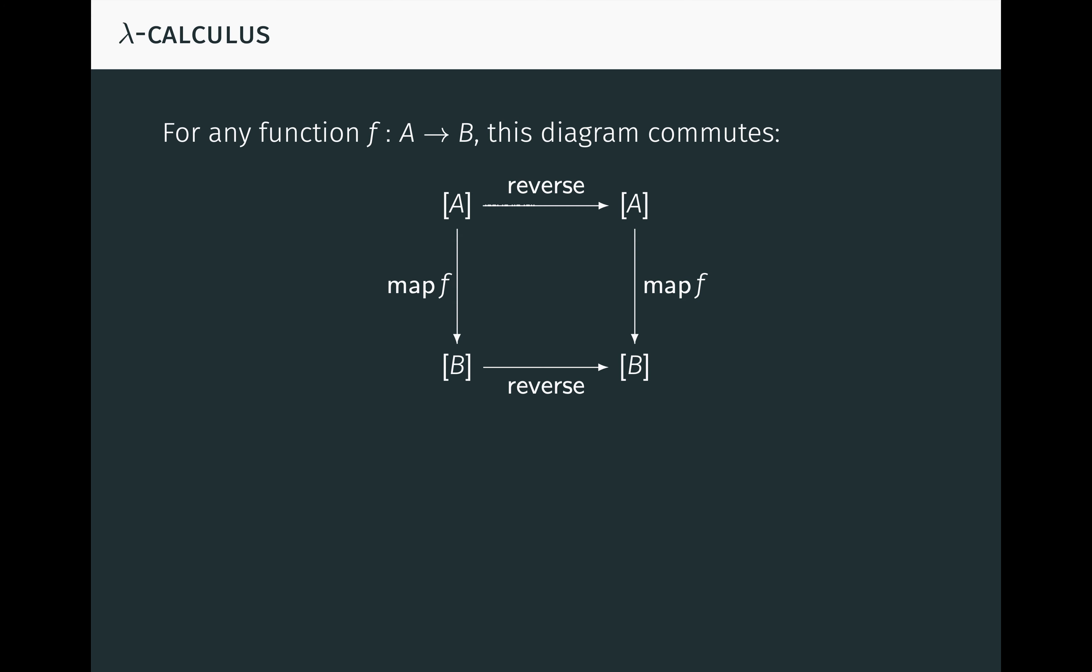Indeed, for any function f from A to B, this diagram commutes. Recall that map lifts the operation of the function f from A's to lists of A's by applying f to each element of a list, resulting in a list of B's.